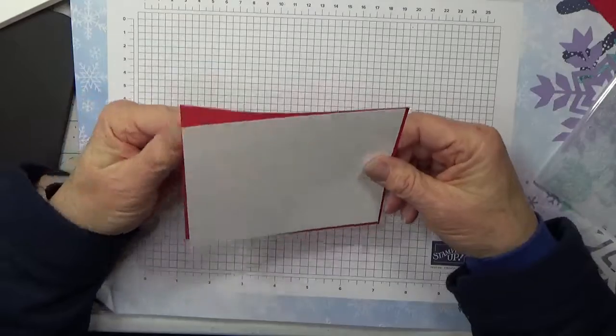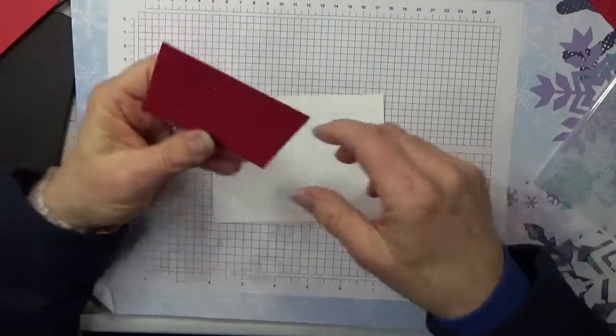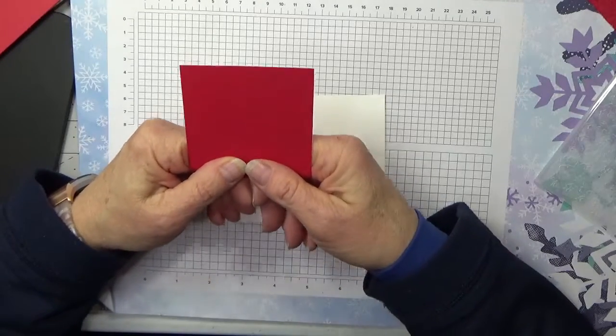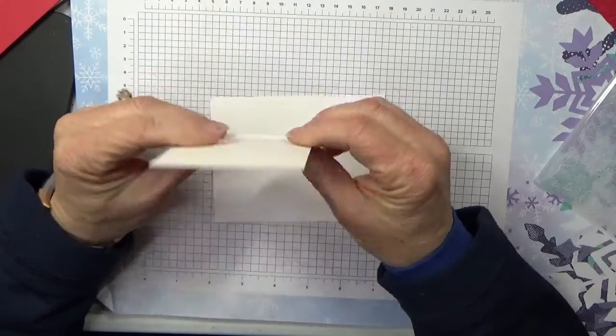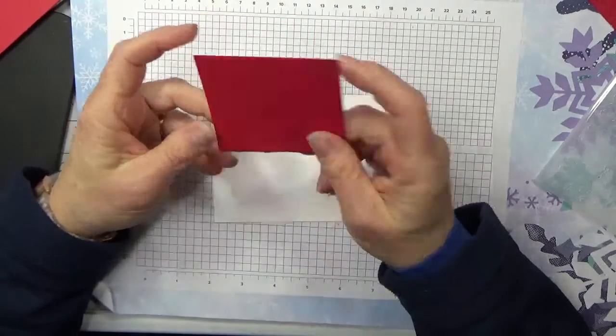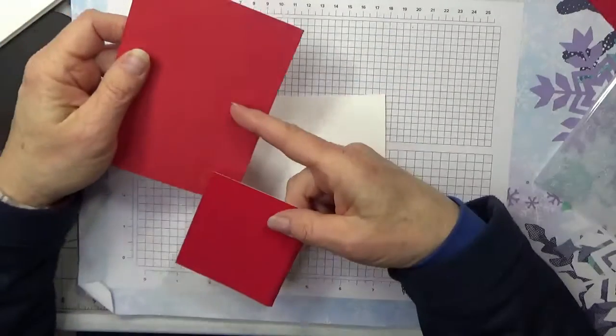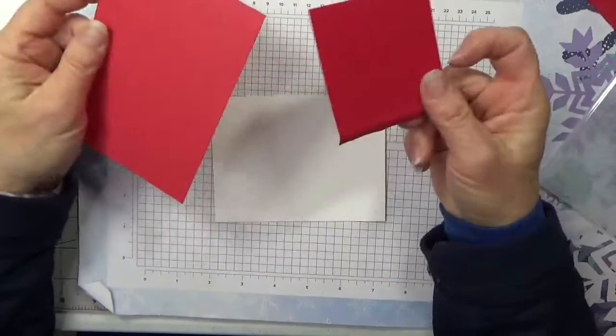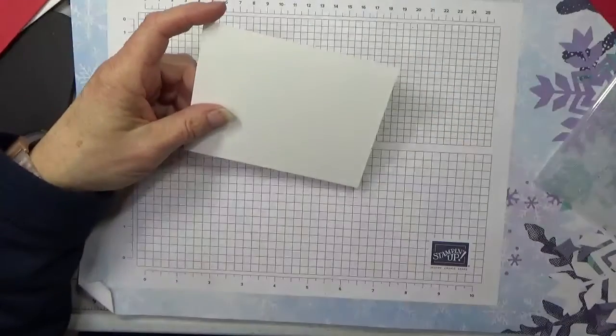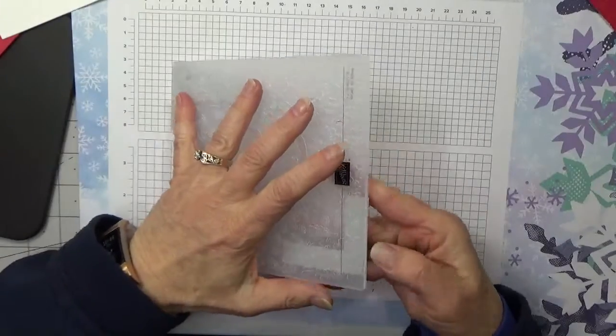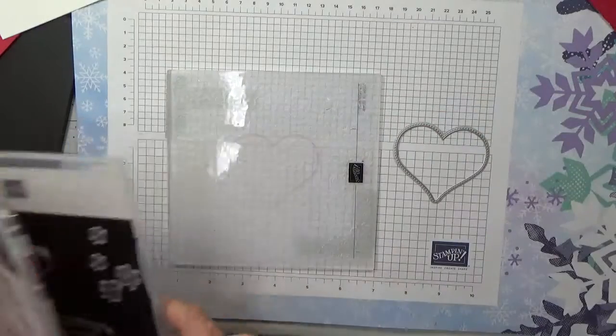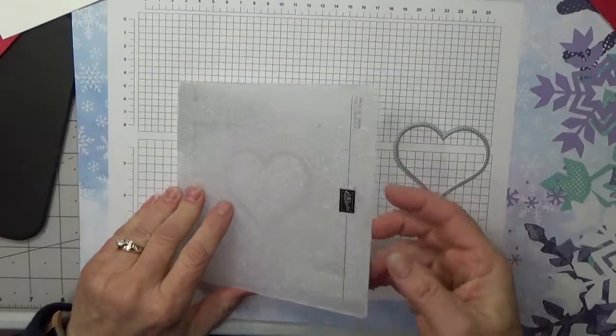And then I still have some of the velvet red cardstock, and I'm gonna use that. If you don't have this, you can certainly use real red cardstock, same thing, no problem. So we're gonna use our hybrid embossing folder. Let's get our die out.